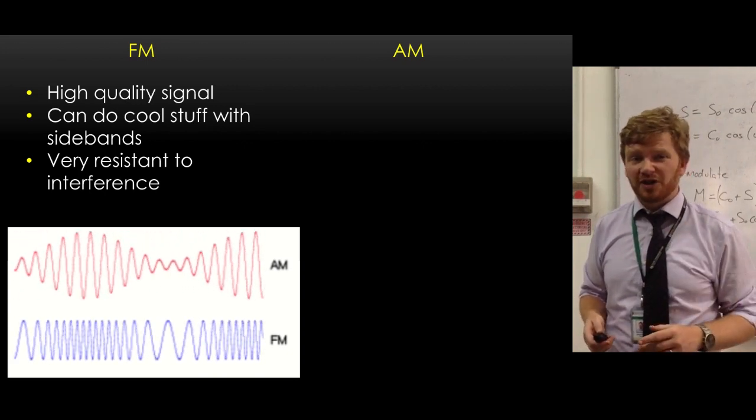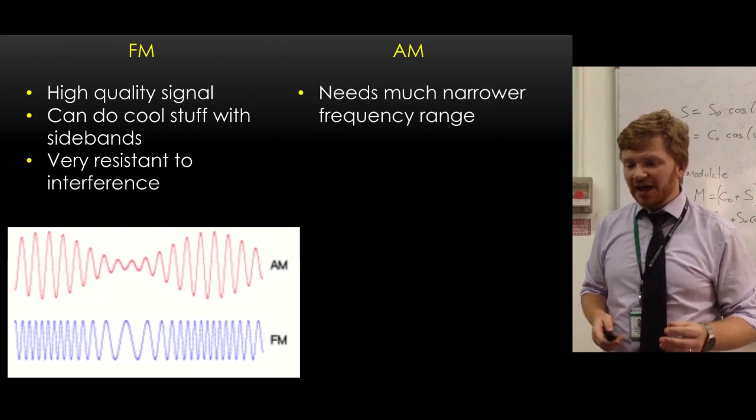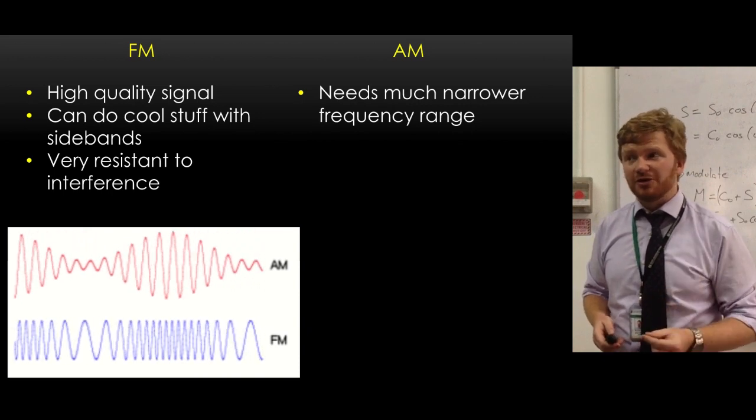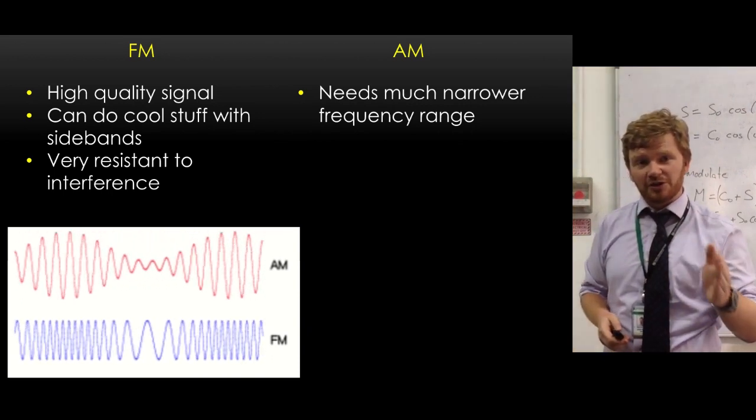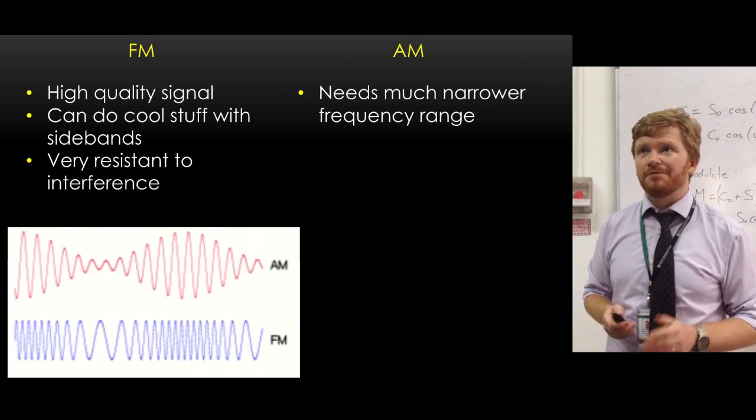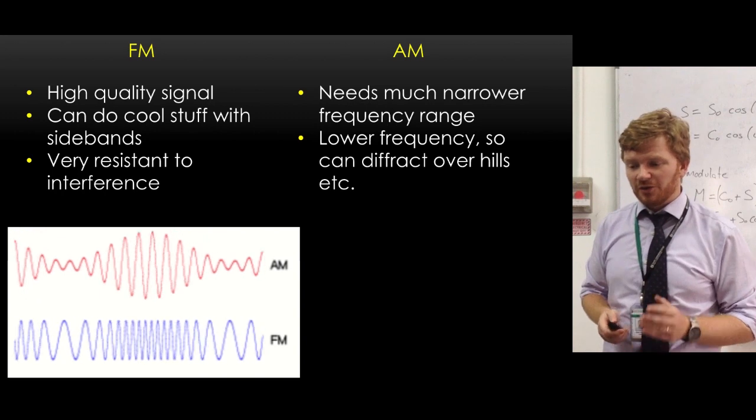There's also some cool stuff that we can do with sidebands, but I'm not going to get into that now because I don't want to overload you. AM has the advantage that you only need a tiny bit of frequency to do it. You only need the carrier frequency. So you can stack your radio stations really close together and not worry too much about what's going on in the background. So it has a lower frequency requirement.